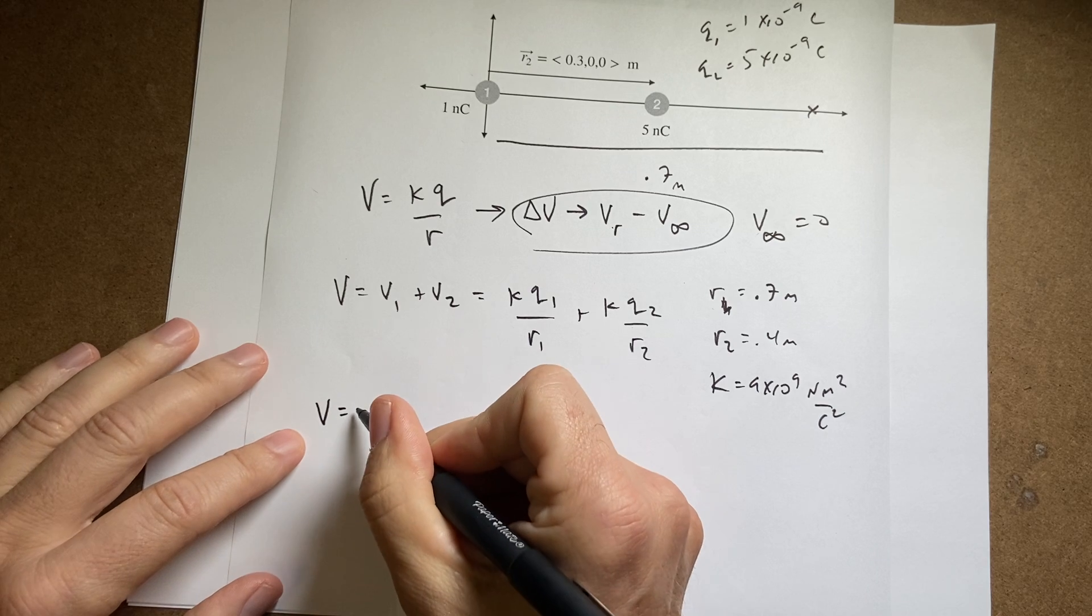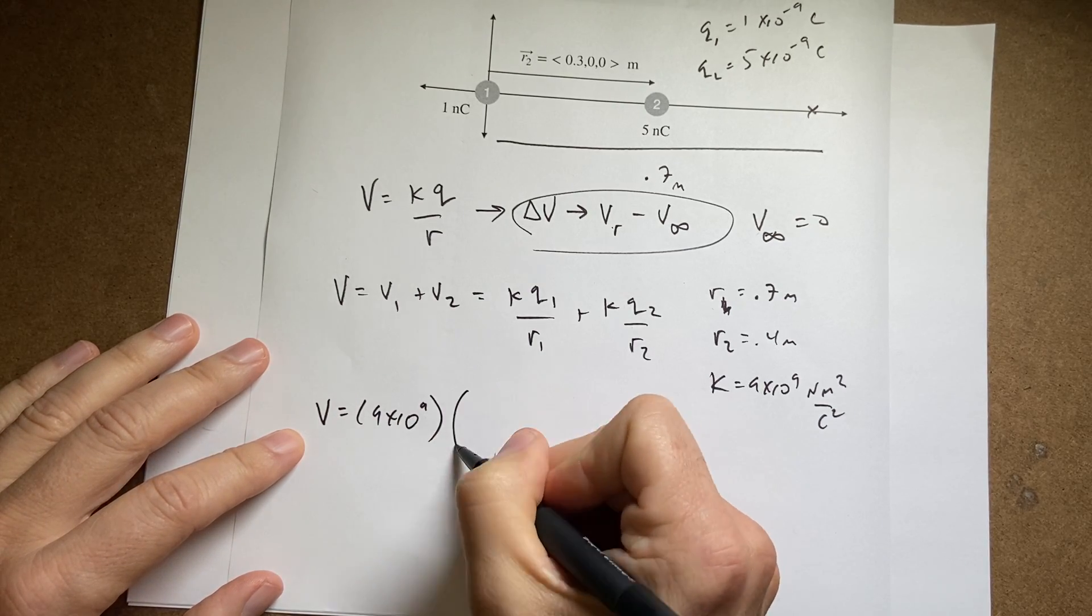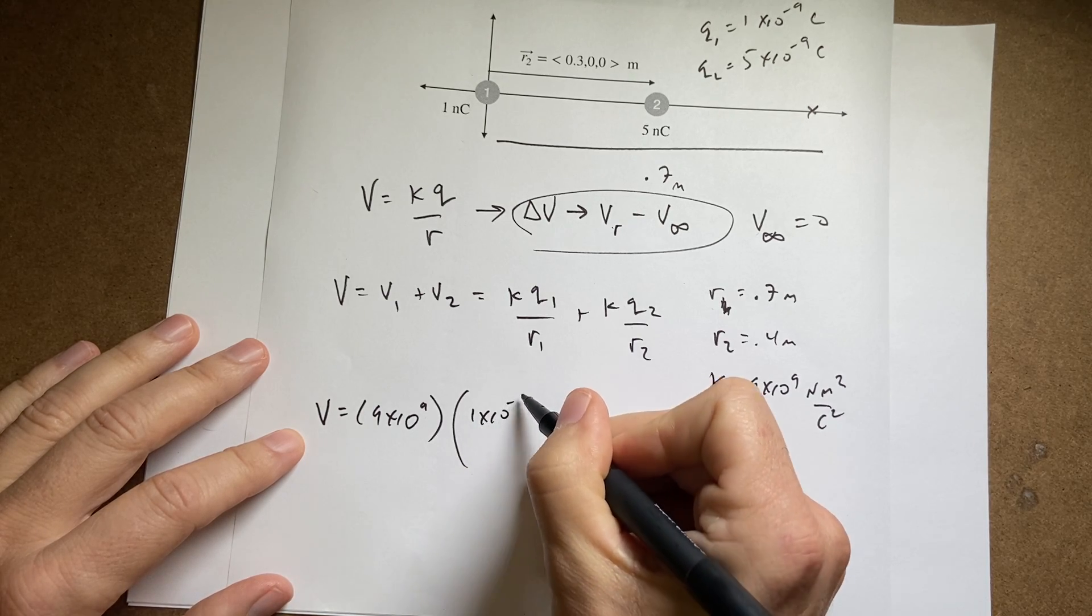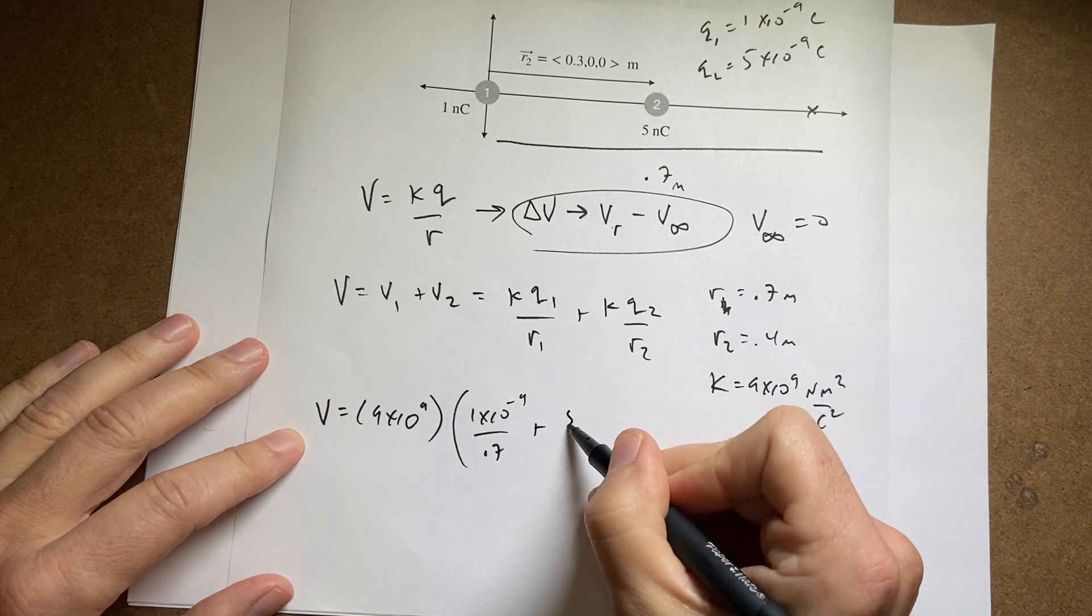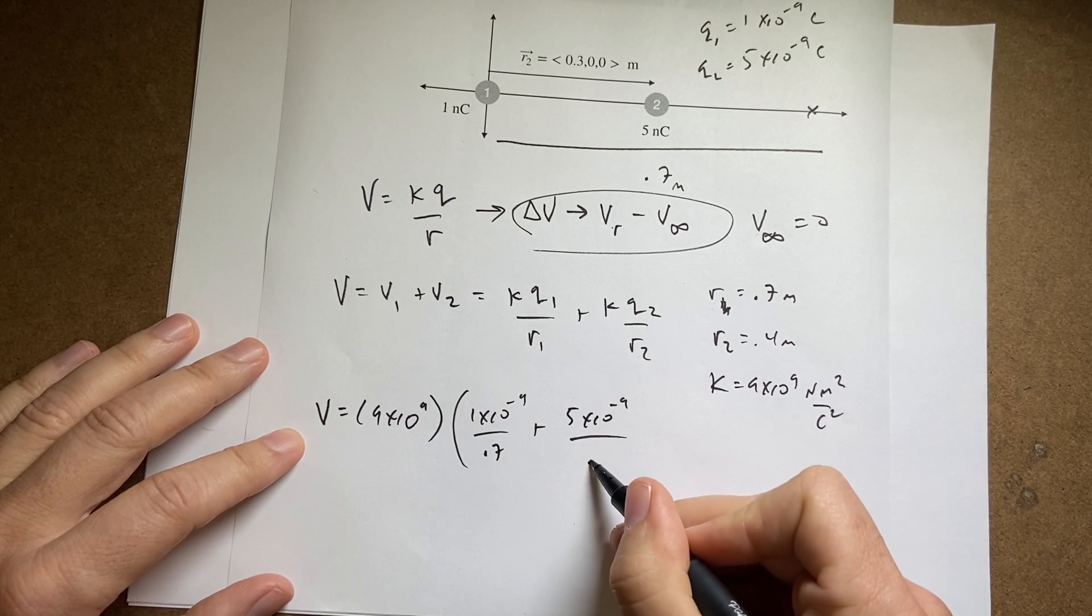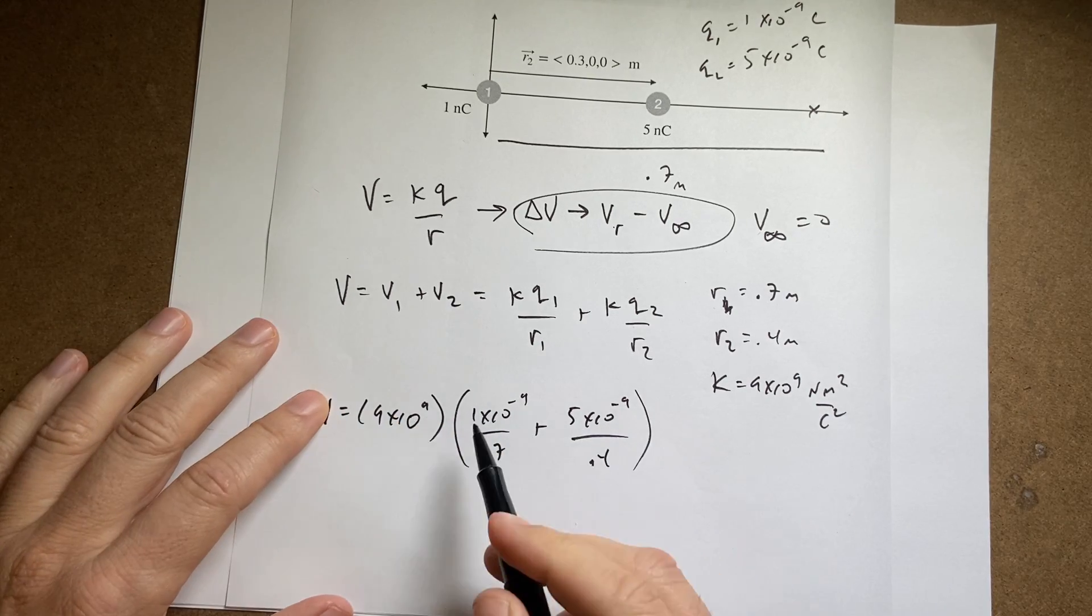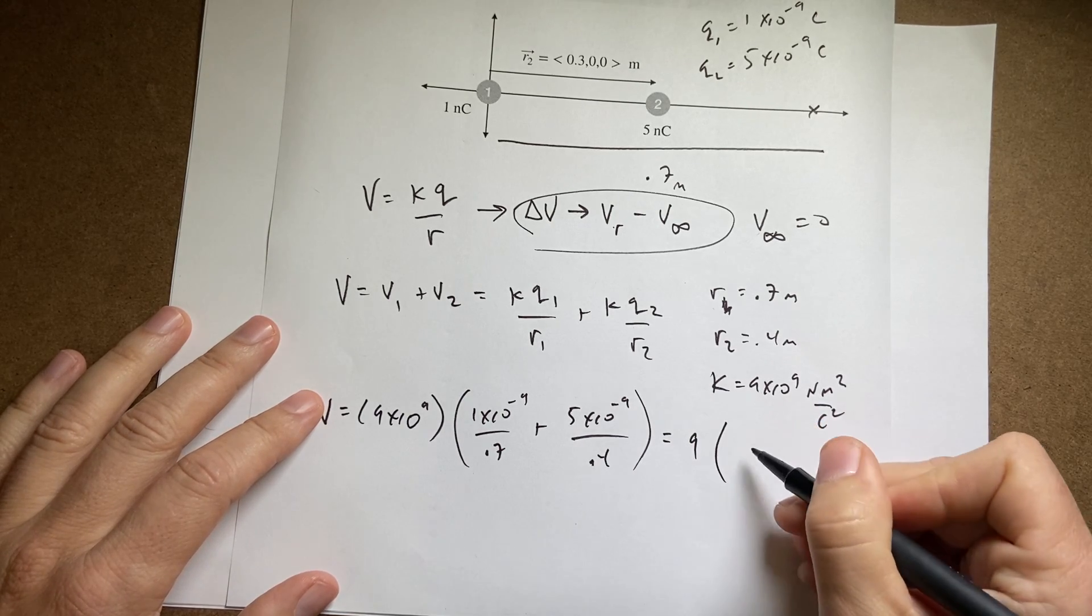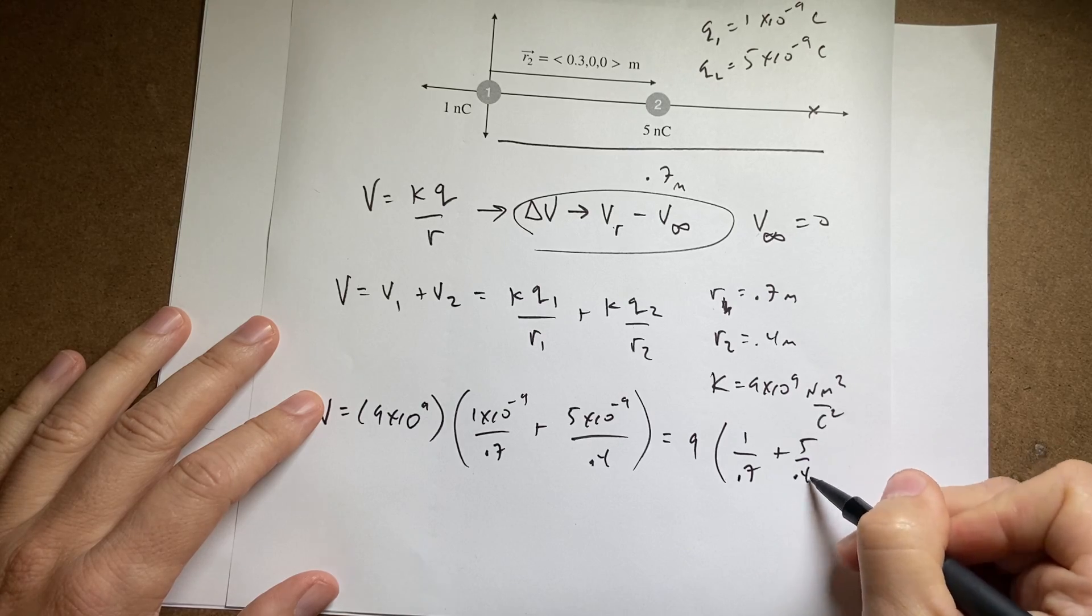Okay, so I get V equals 9 times 10 to the 9th times q_1, which is 1 times 10 to the negative 9th, over r_1, which is 0.7, plus 5 times 10 to the negative 9th over 0.4. Now here I can factor out a 10 to the negative 9th and they cancel with that, so I actually get—make it a little bit easier—get 9 and then I get 1 over 0.7 plus 5 over 0.4.